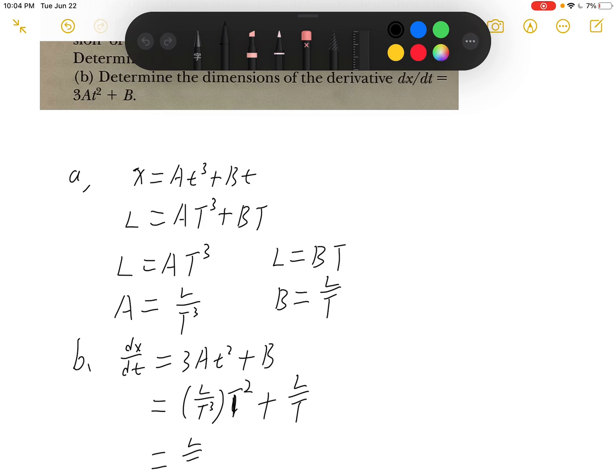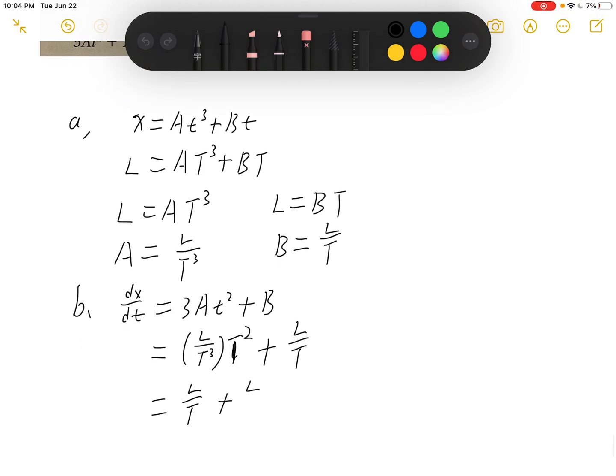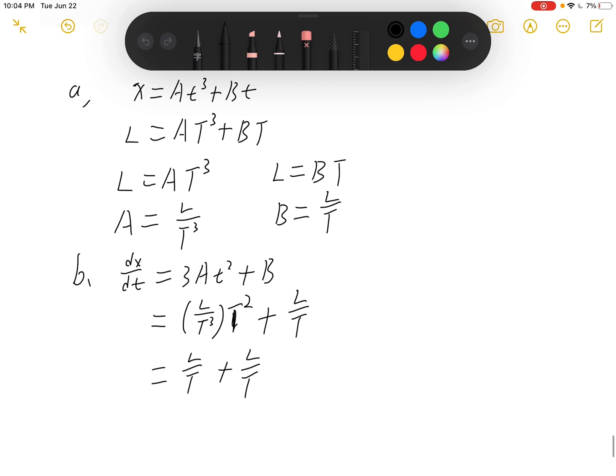And simplify this, we will have L over t plus L over t. And because they are the same dimensions, we can just add them together. It will still be L over t. So this is the dimension for dx over dt.